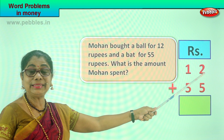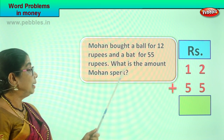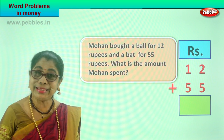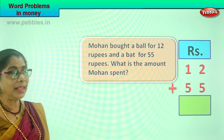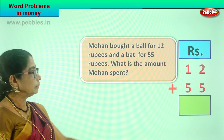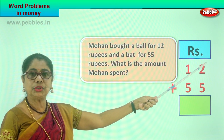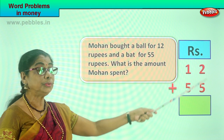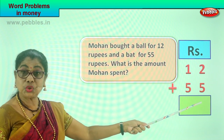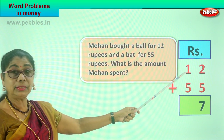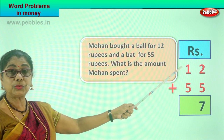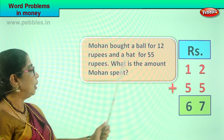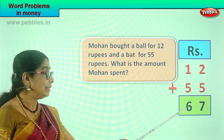What is the amount Mohan spent? Let's add and find out. We go to the ones place first and add the ones: 2 ones and 5 ones. 2 plus 5 is certainly 7, so we write the 7 here. Then we go to the tens place: 1 plus 5 or 5 plus 1 is 6, so we write the 6 here. What is the amount Mohan spent? Mohan spent 67 rupees.